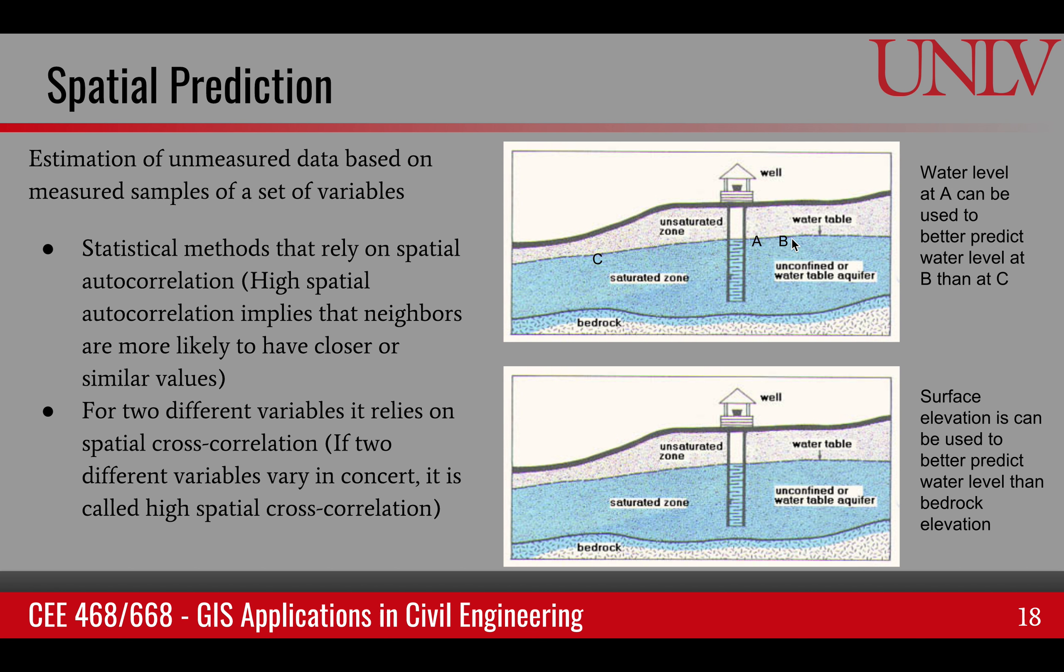Likewise, in this case we're using the same variables. Water table at A versus water table at B versus water table at C. But this can be extended in case of spatial prediction to other variables as well. For example, let's say we are relating water table with the surface elevation and the bedrock elevation. In this case, it won't be called autocorrelation.